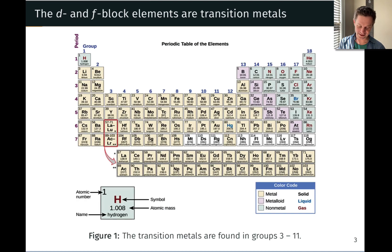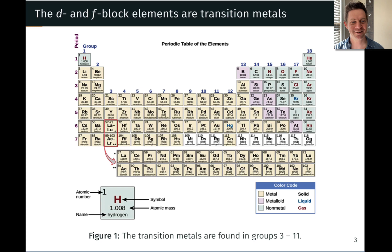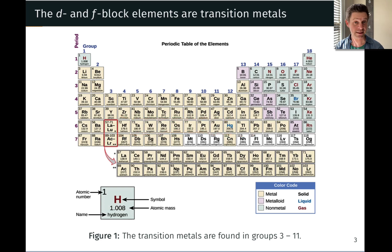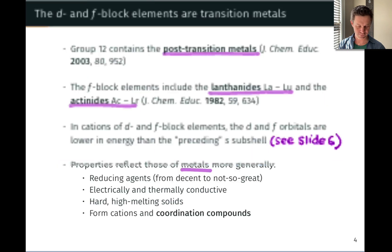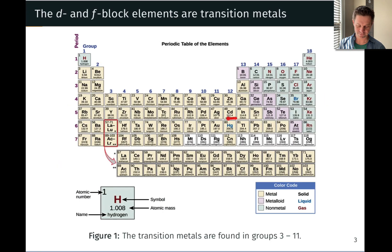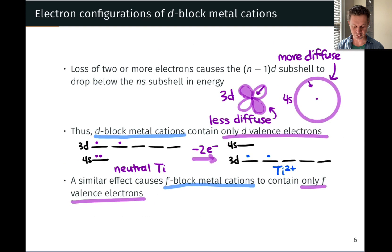Pb²⁺ has no electrons remaining in the P subshell. Lead is a main group element, but its electron configuration is equivalent to that of the nearest post-transition metal, which is mercury — [Xe]6s²5d¹⁰4f¹⁴.